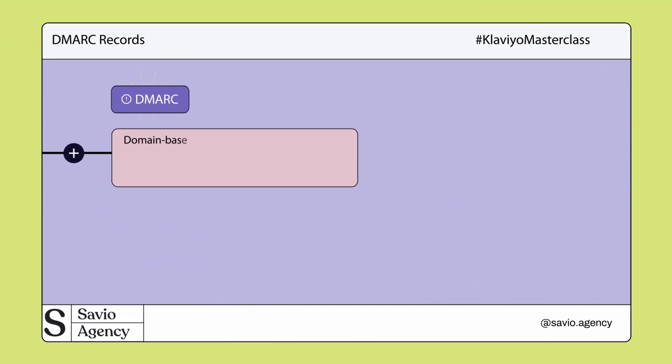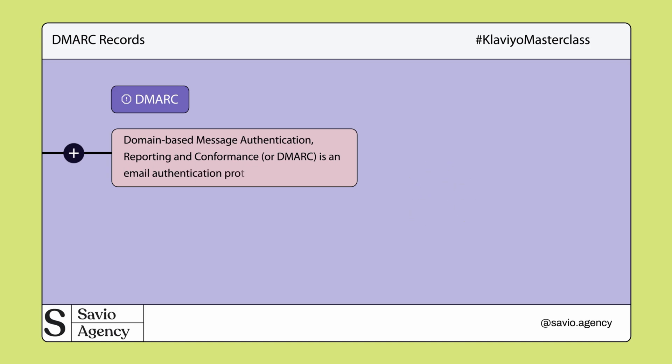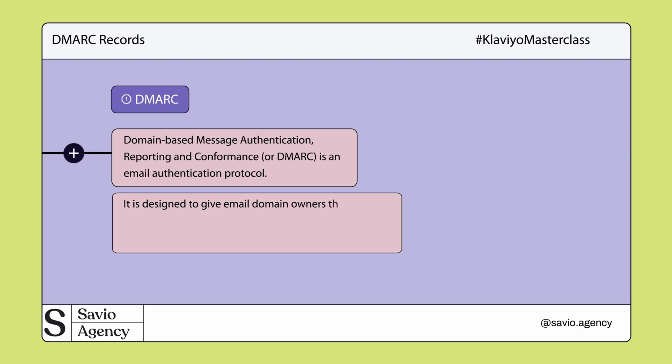DMARC Records — Domain-Based Message Authentication Reporting and Conformance, or DMARC for short — is an email authentication protocol designed to give email domain owners the ability to protect their domain from unauthorized use, commonly known as email spoofing. Without DMARC, hackers and other malicious users can impersonate messages, making it appear as though they come from your organization or domain. So as a first step, let's add a DMARC record to our domain.